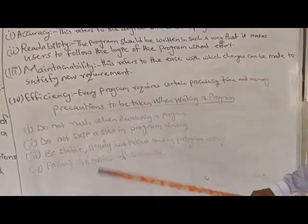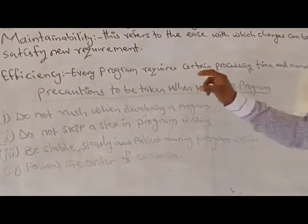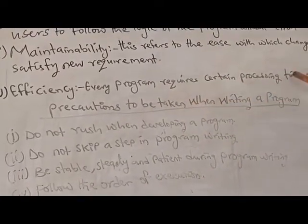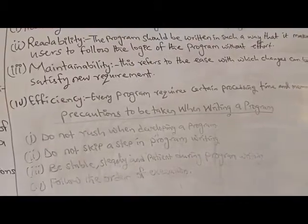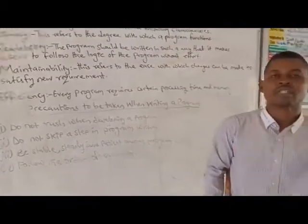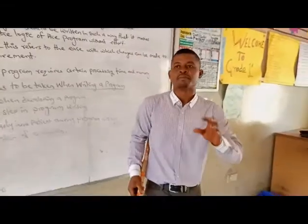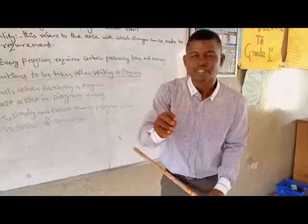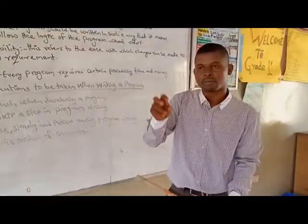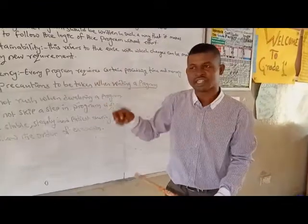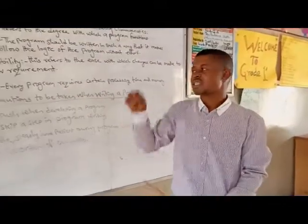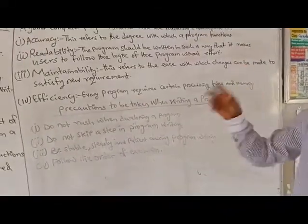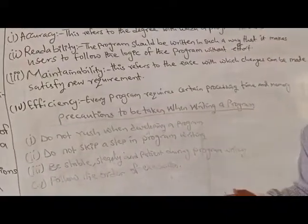The fourth characteristic is efficiency. Every computer program requires a certain processing time and memory. When you want to install or download an app from the Play Store, it requires a certain amount of space on your phone or computer device. That is efficiency — you should be able to tell somebody that this program is 1 kilobyte, 2 MB, or 3 GB.